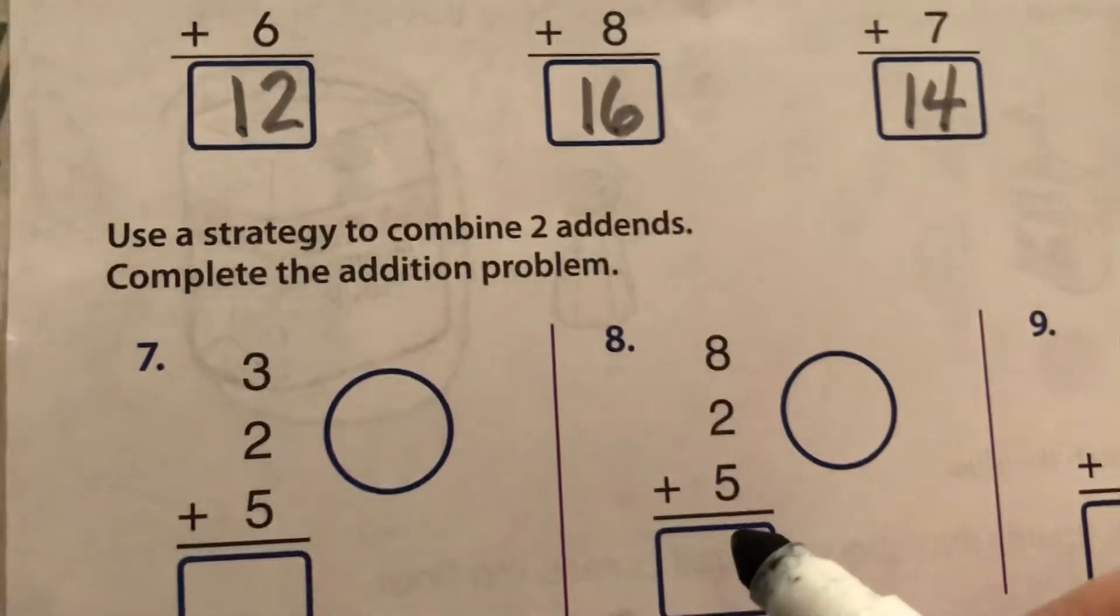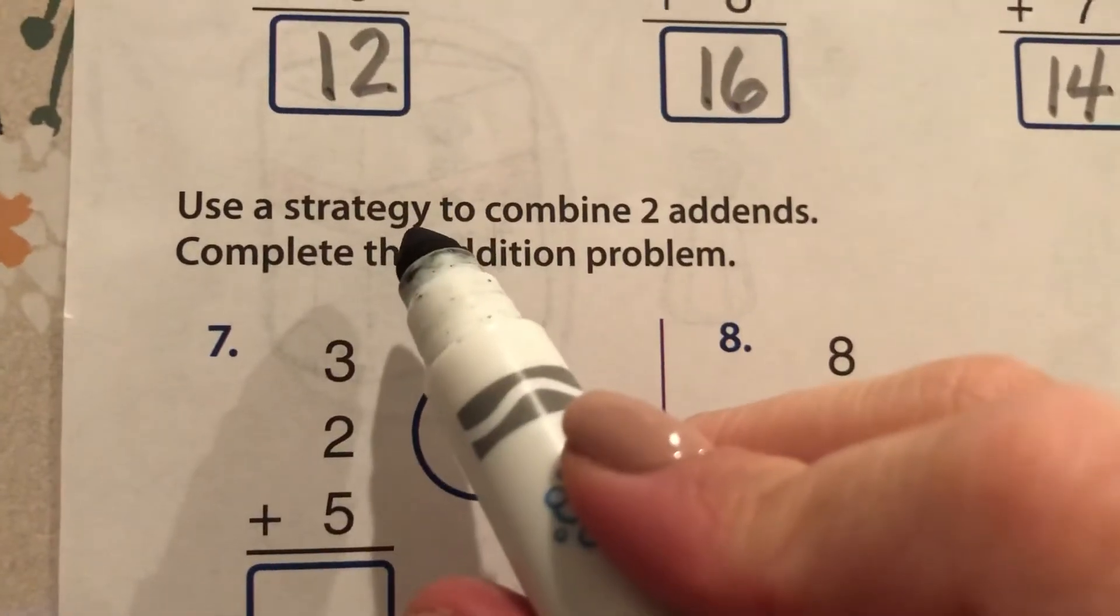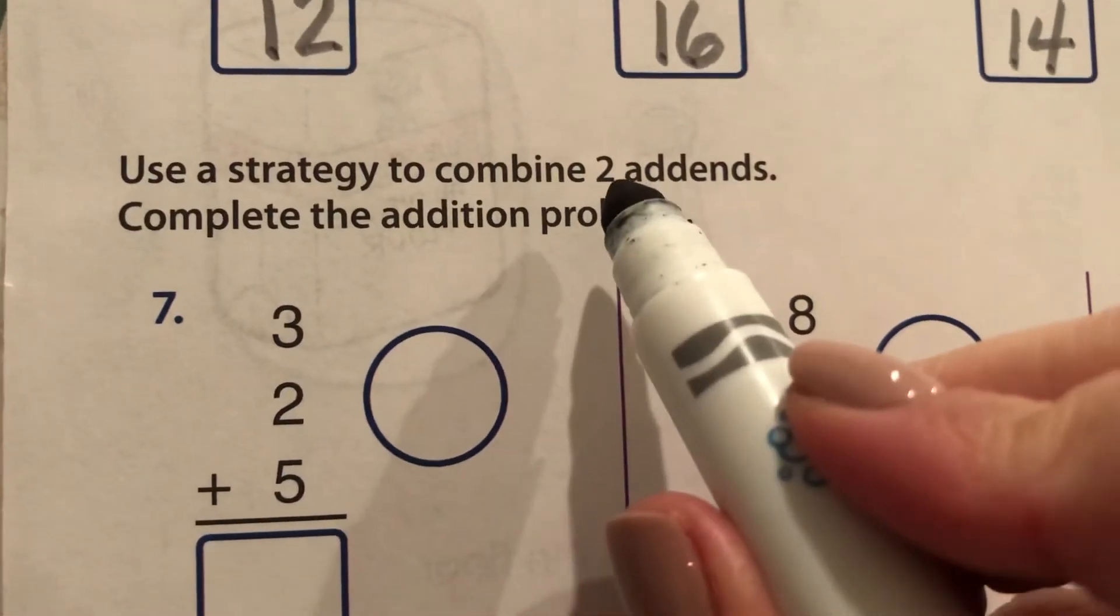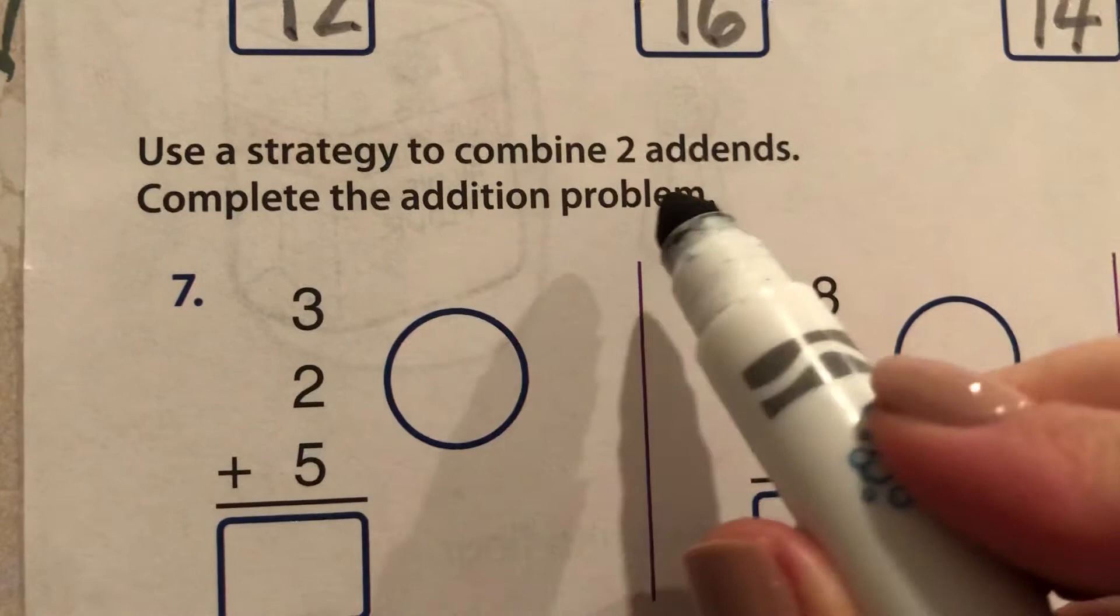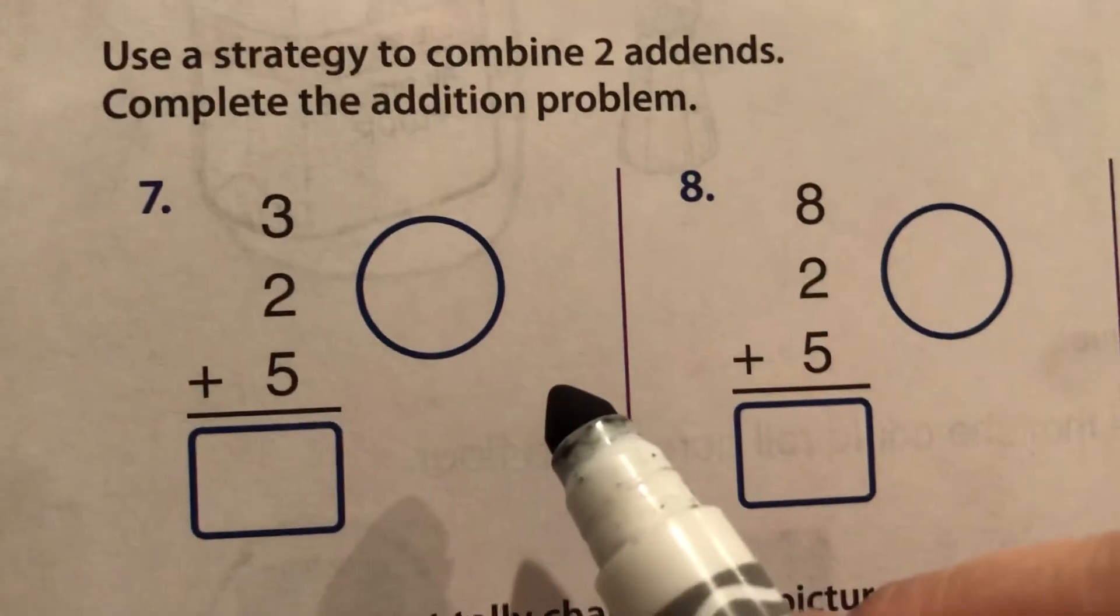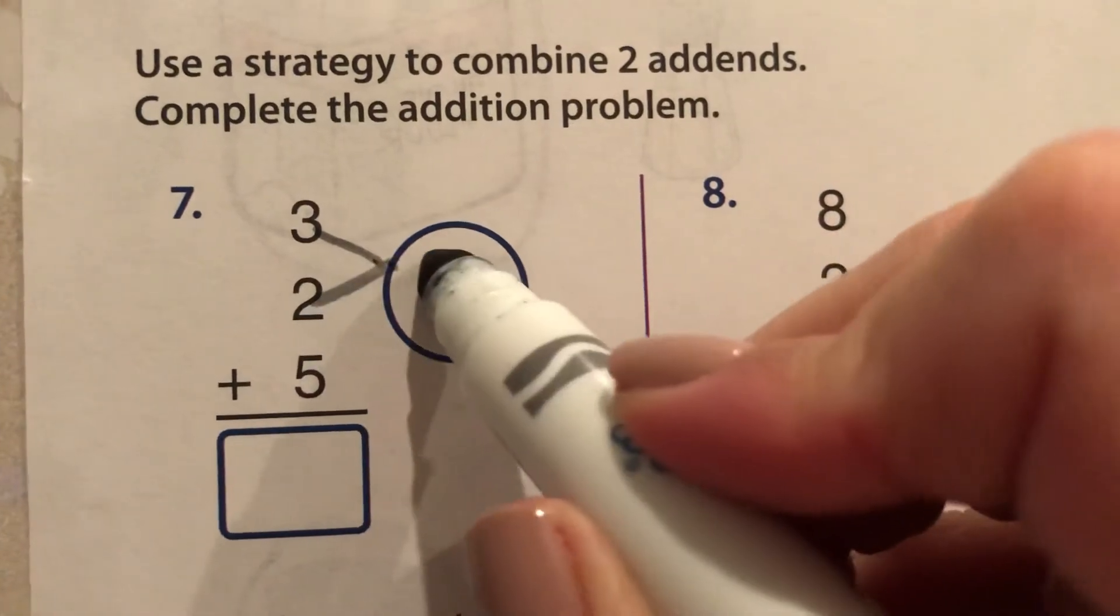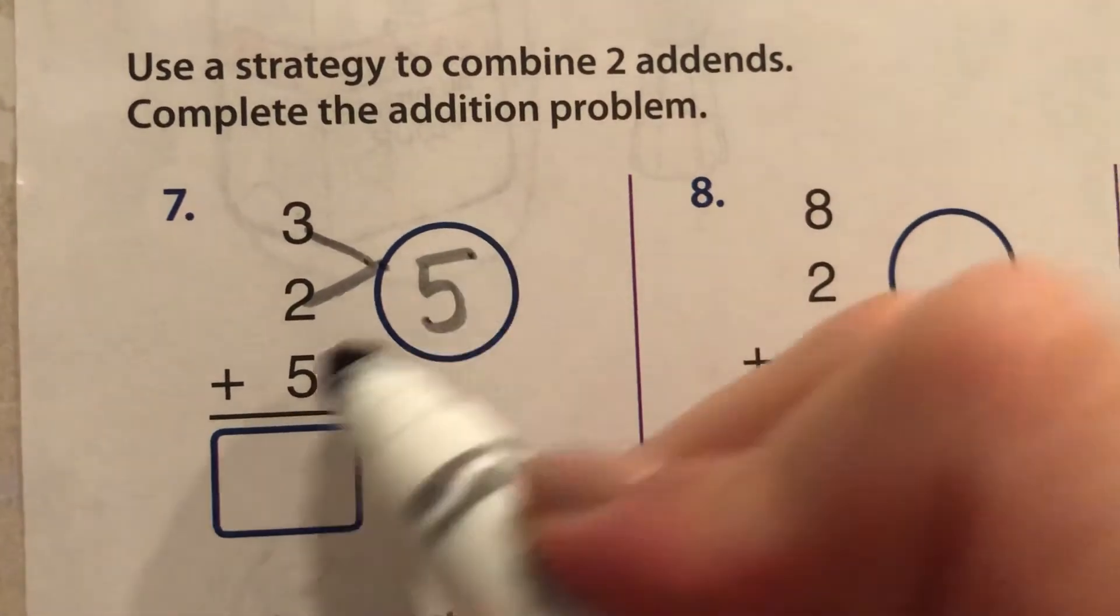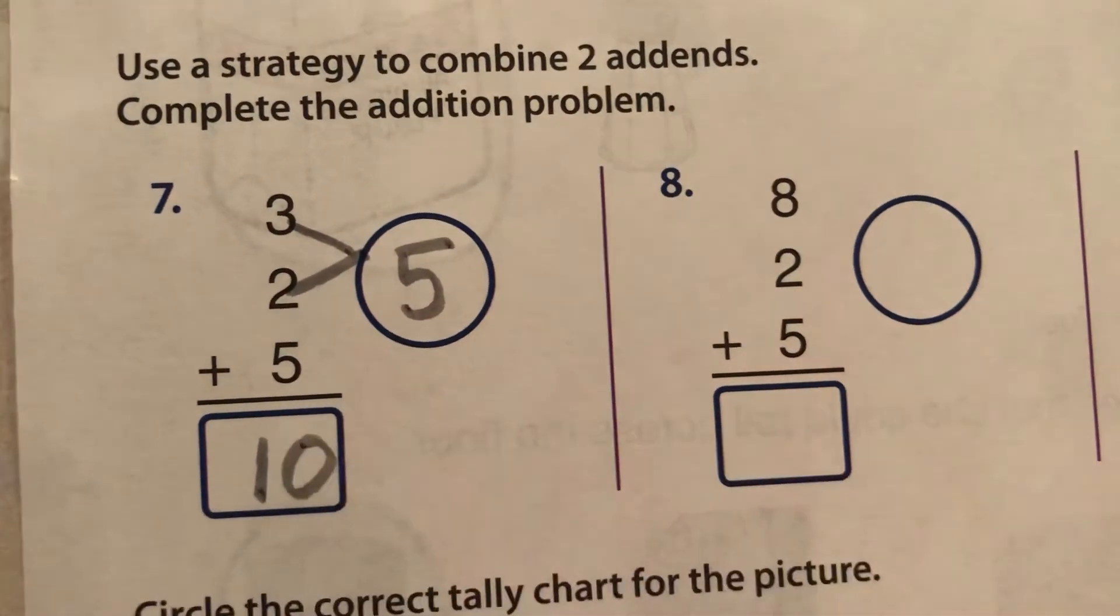Let's see what this says. It says use a strategy to combine two addends, complete the addition problem. Well, one strategy for right here is the three and the two make five. Five and five are doubles, which is 10. So that's a good strategy.